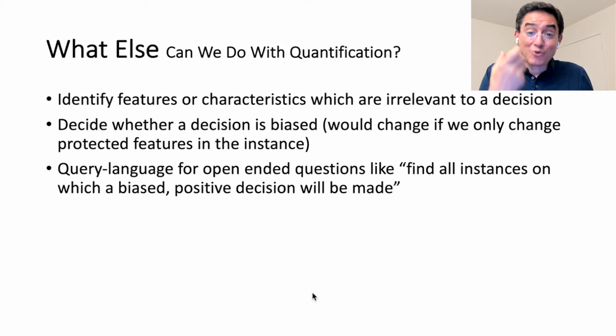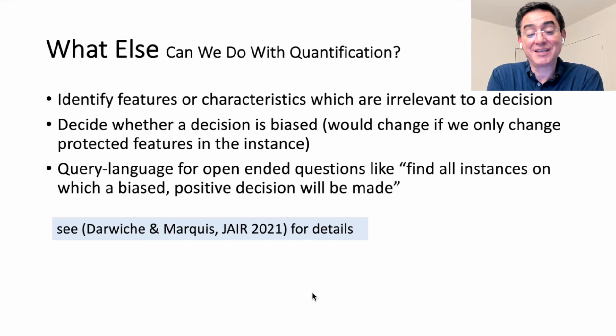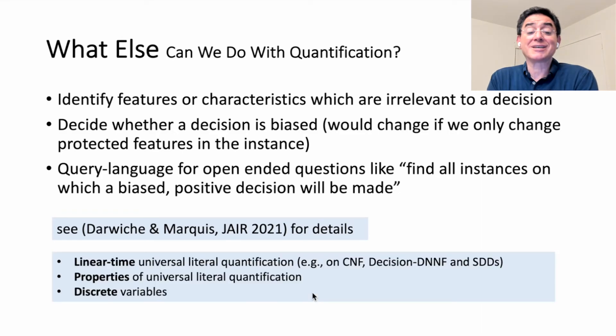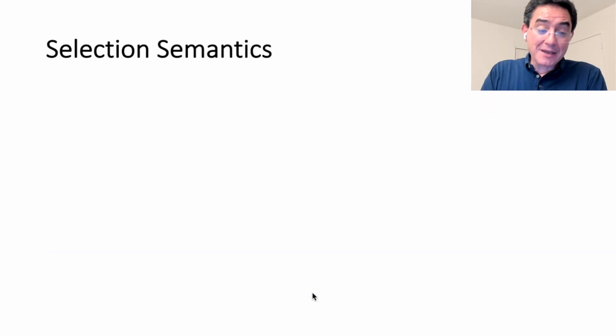like find me all instances on which a biased positive decision will be made. You can write a Boolean formula, quantified one, whose solutions are precisely these instances. You can see all of the details in the journal paper on the subject, which also discusses other things like algorithms for universal literal quantification, showing how it can be done in linear time on certain forms of logical formulas.